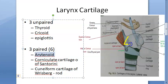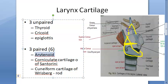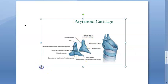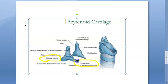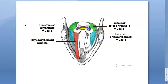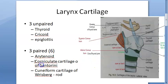The arytenoid cartilages are paired and pyramid-shaped. Their base sits on the cricoid cartilage, and the apex supports the corniculate cartilage. They have two processes: the muscular process where muscles attach, and the vocal process where the vocal folds attach. Muscles attached to the arytenoid include the transverse arytenoid, posterior cricoarytenoid, lateral cricoarytenoid, and thyroarytenoid muscles.